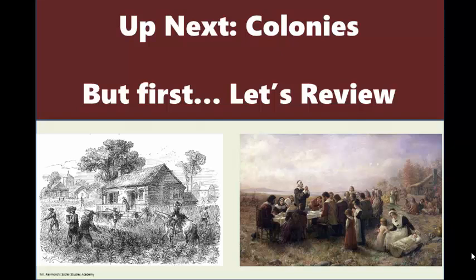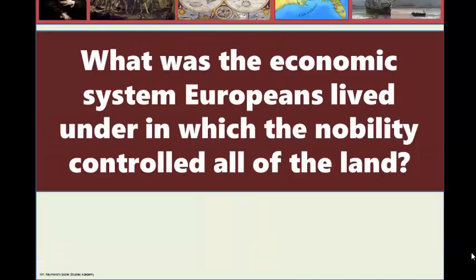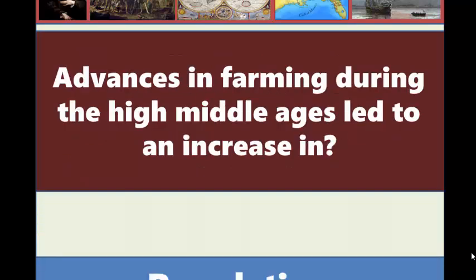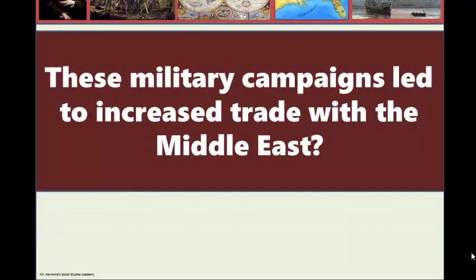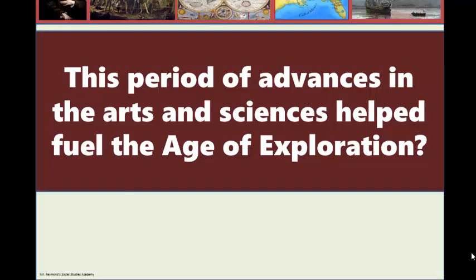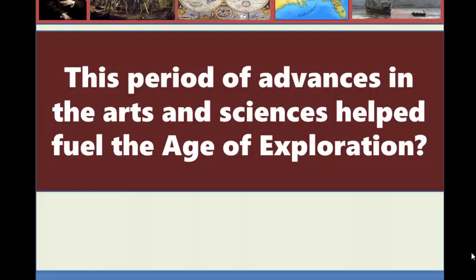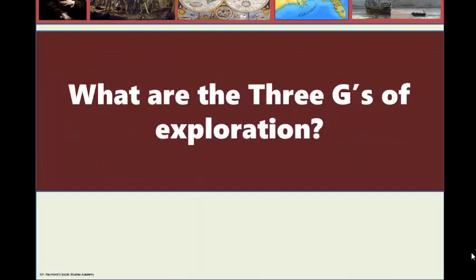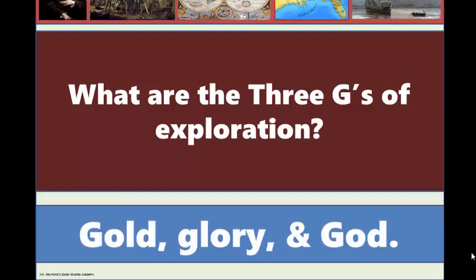All of these explorations would help drive the creation of what would one day become the United States of America, which is where we will pick up next time. But first, let's review. What was the economic system Europeans lived under in which the nobility controlled all of the land in the early Middle Ages? That was feudalism. Advances in farming during the High Middle Ages led to an increase in population. These military campaigns led to increased trade with the Middle East — the Crusades. This period of advances in the arts and sciences helped fuel the age of exploration — the Renaissance. This was the economic theory practiced by European nations which helped fuel competition to trade — mercantilism.